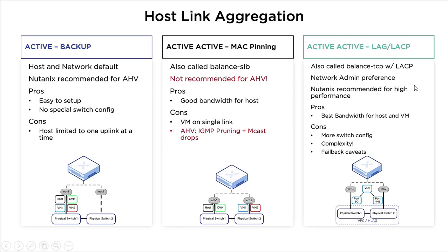With active-active LAG, you need more switch configuration — you need to configure the switches with VCP, MLAG, and LACP, which adds complexity. You also need to test failover: kill one switch and verify that traffic on that adapter forwards to the other adapter or switch, then bring the switch back and verify traffic rebalances. The same test applies to the second switch, making this configuration more complicated to manage.